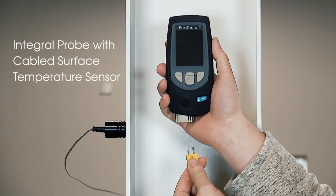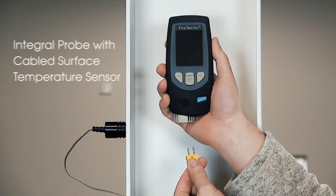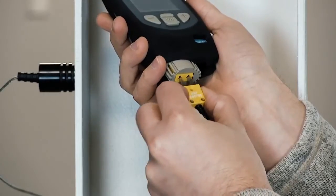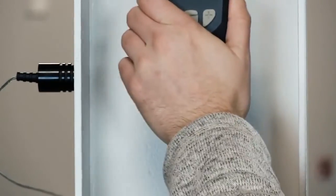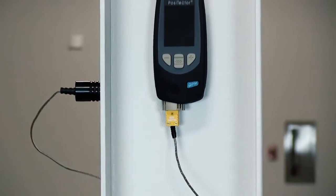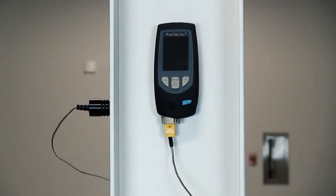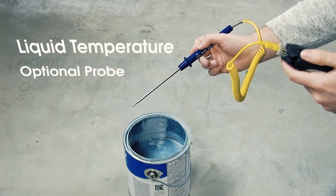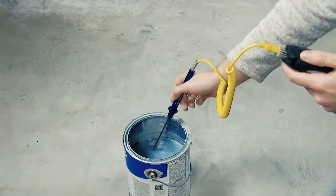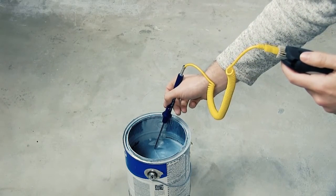The Positector DPM integral probe with cabled surface temperature sensor features a K-type thermocouple connector. The included magnetic surface temperature probe is ideal for logging surface temperatures continuously. The optional liquid temperature sensor can measure the temperature of paints prior to application by dispersion equipment.